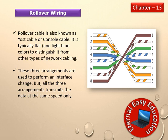These three wiring arrangements are used to perform interface changes, but all three transmit data at the same speed — whether it is straight-through, crossover, or rollover.